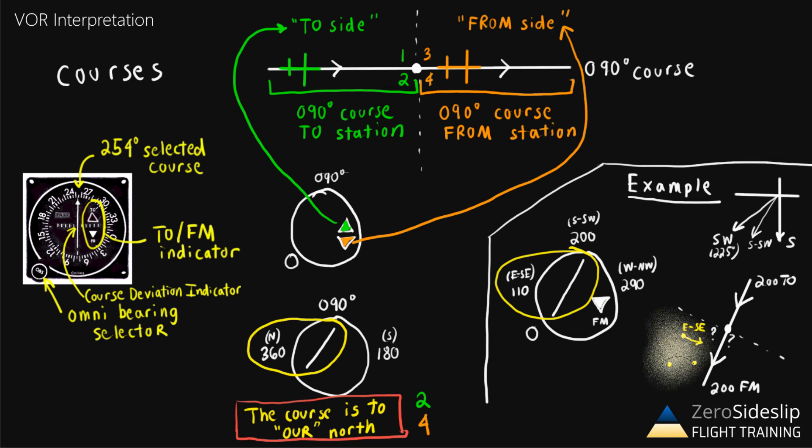Again, the most key part of interpreting this is to know that when the needle is deflected to this side of the instrument, the course is to the east-southeast of the airplane. Do not think of this as left or right. Because let's say we had an airplane that was pointed in this direction here, and we try to interpret the needle as saying that the course is to our left, because the needle is on the left side of the instrument. Well clearly the course is not to our left in this case, it's to our right.